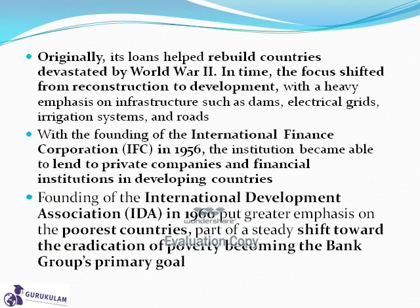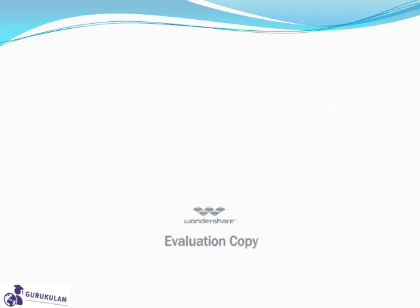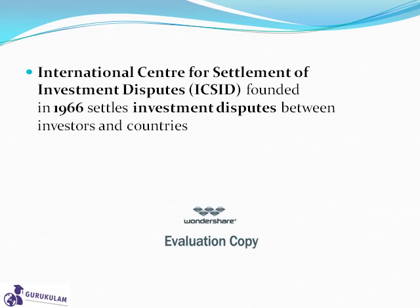The founding of International Development Association (IDA) in 1960 put greater emphasis on the poorest countries, shifting toward poverty eradication as the bank group's primary goal. The International Center for Settlement of Investment Disputes (ICSID), founded in 1966, settles investment disputes between investors and countries.